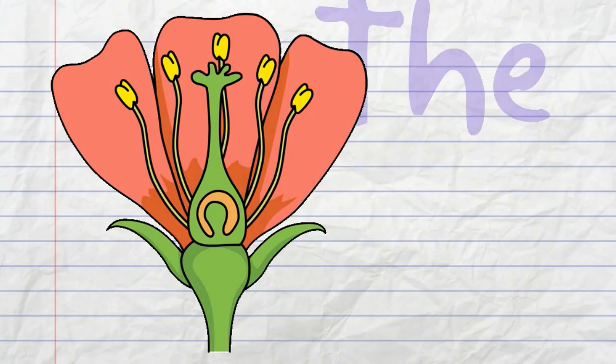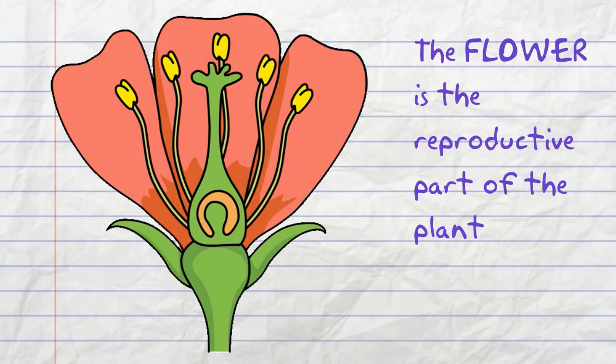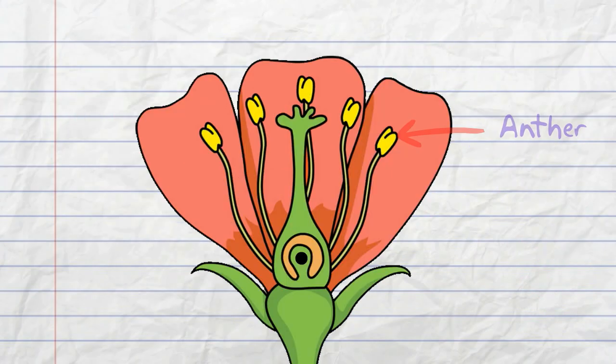The flower is a reproductive part of the plant. Most flowers contain both male and female parts. The anther produces pollen grains which contain male reproductive cells.